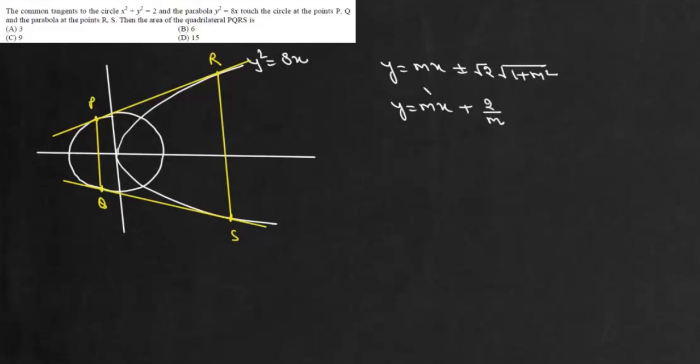And we are talking about common tangent. So it will have same slope and same equation. So from here, we can write plus minus root 2 under root 1 plus m squared will be equal to 2 by m.